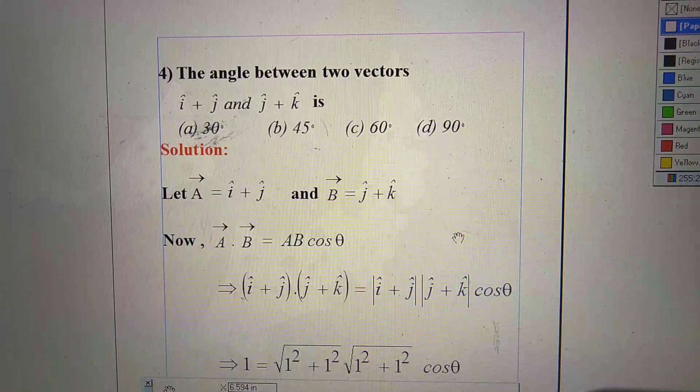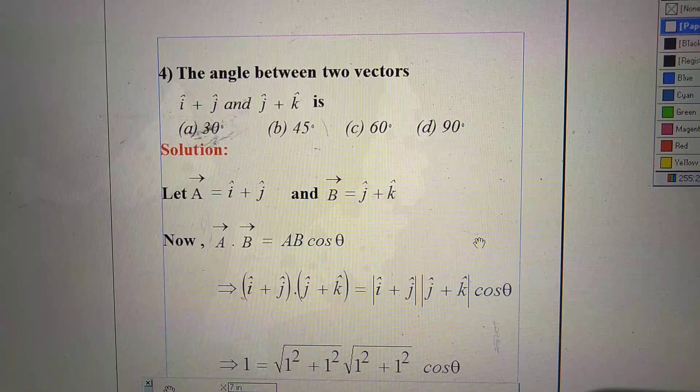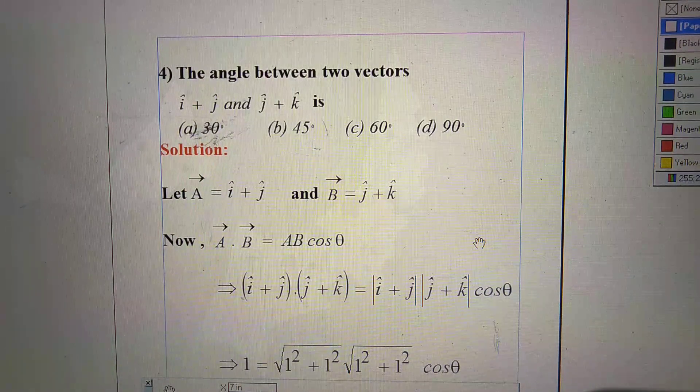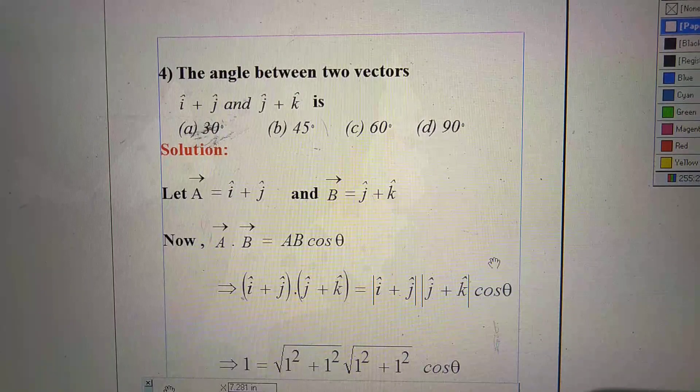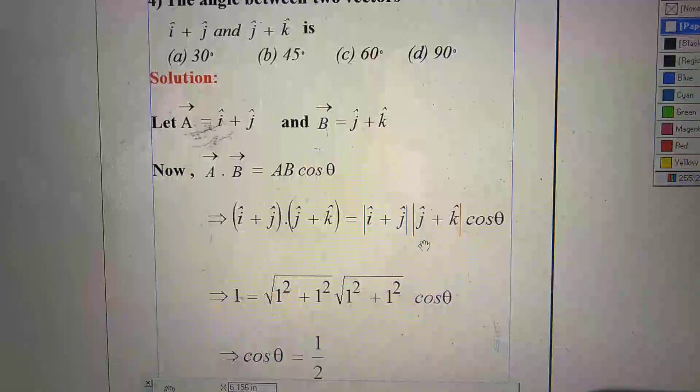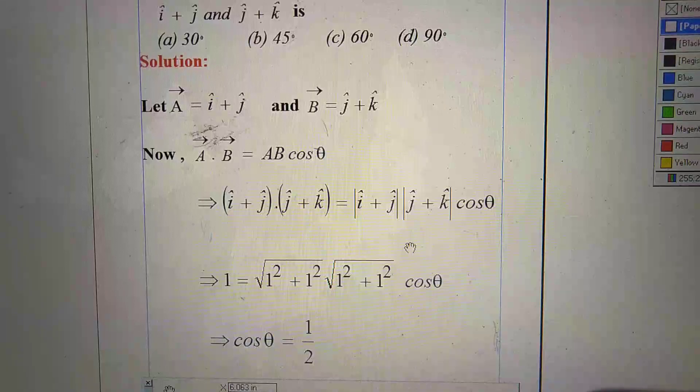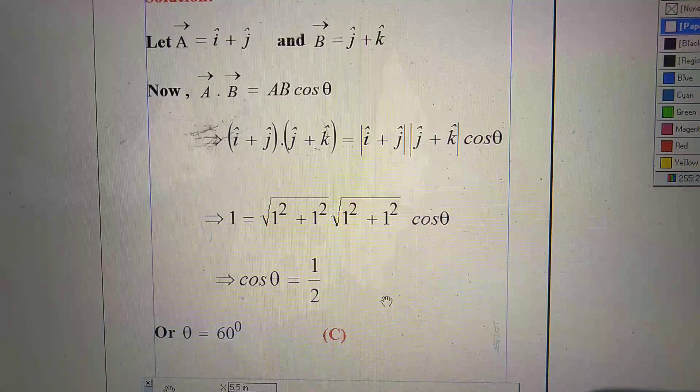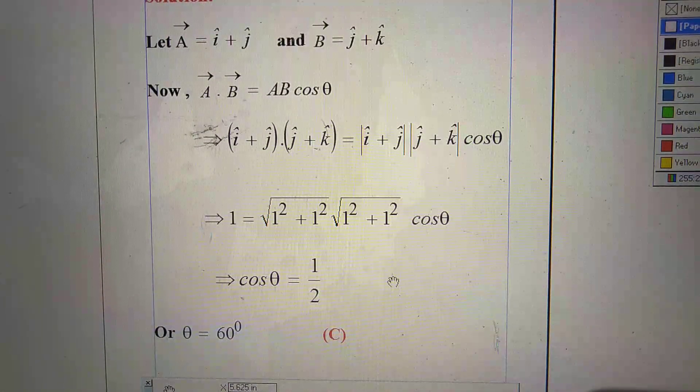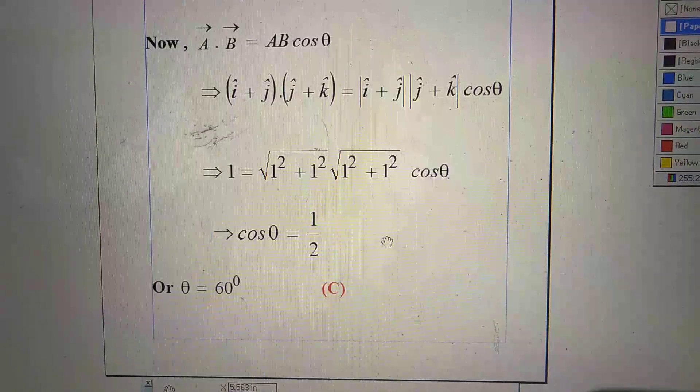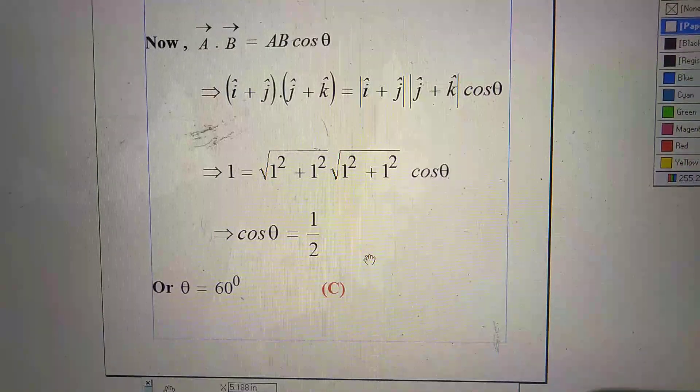And then you use the formula dot product A vector dot B vector equal to AB cos theta. After inserting all these values and calculation, we find cos theta equal to half. So theta should be equal to 60 degree. So right option is C.